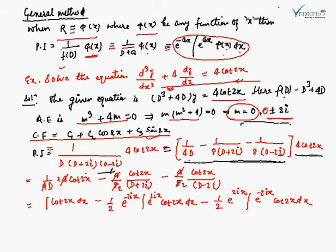Multiplying through: the first term is 4 cot 2x/(4d), the second term is −4 cos 2x/(8(d + 2i)), and the third term is 4 cos 2x/(8(d − 2i)). The 4s and 8s simplify. Since d inverse means integration, we integrate cos 2x once for the first term. For the second and third terms, phi(x)/(d + a) form is used where phi(x) = cos 2x and a = 2i.